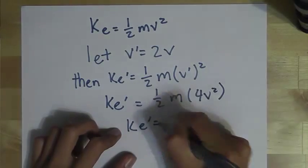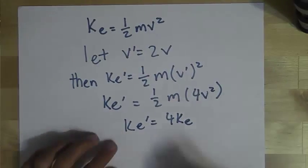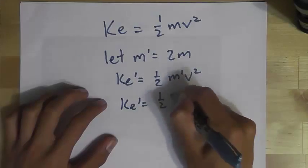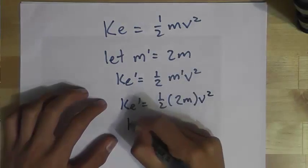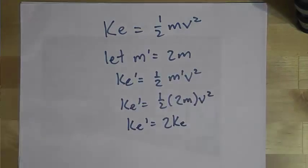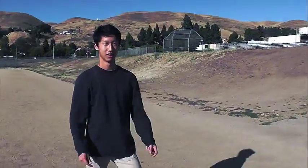So then the velocity doubles, I go by a factor of four. And what's more, when mass is doubled, the same happens to me too. Yeah, I'm the energy of motion.